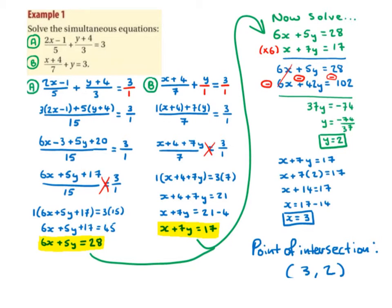5 into 15 goes 3 times, so we multiply the first numerator by 3. 3 into 15 goes 5 times, so we multiply the second numerator by 5. Expanding: 3 by 2x is 6x, 3 by minus 1 is minus 3, 5 by y is 5y, 5 by 4 is 20 — all over 15, equal to 3 over 1. Simplifying: minus 3 plus 20 is 17. Cross multiplying gives 6x plus 5y plus 17 equals 45, and 45 minus 17 is 28, so 6x plus 5y equals 28.